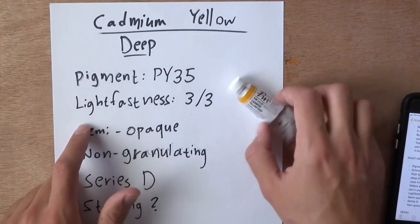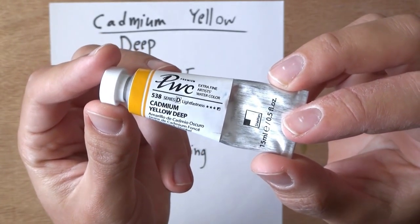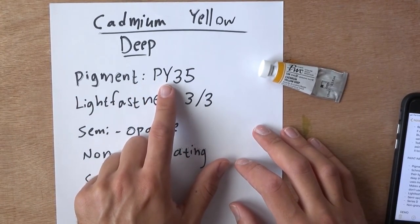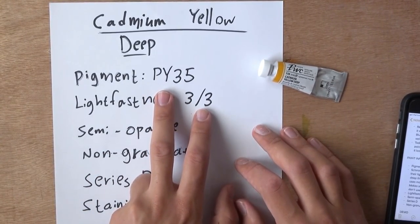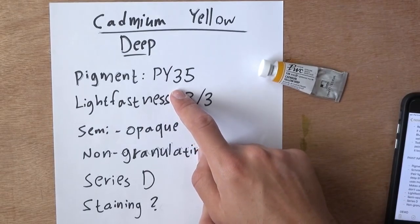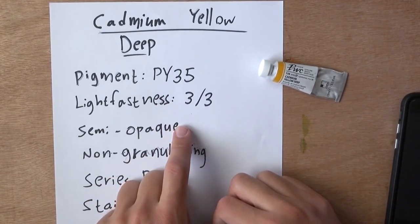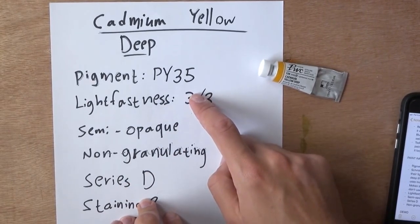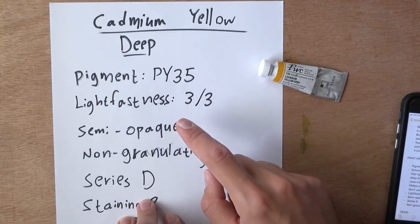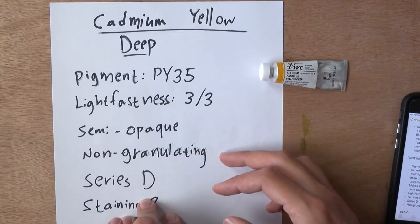So Cadmium Yellow Deep by PWC. Let me give you a better look at the actual tube itself. What we've got here is pigment PY35. That pigment I did want to compare because it's a Cadmium. I wanted to compare it to other brands such as Daniel Smith and Schmincke. From what I found, Schmincke also uses PY35. I did check Daniel Smith and they don't seem to use PY35. They use PY53, which makes sense. I read somewhere that they don't use Cadmiums at all, they eliminated them for safety and health concerns for their employees probably as well in the preparation process.